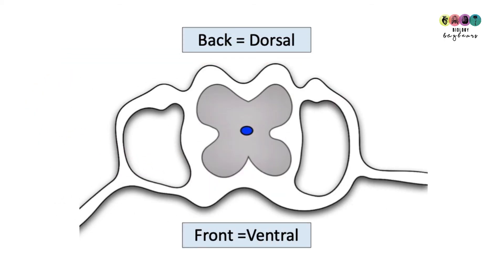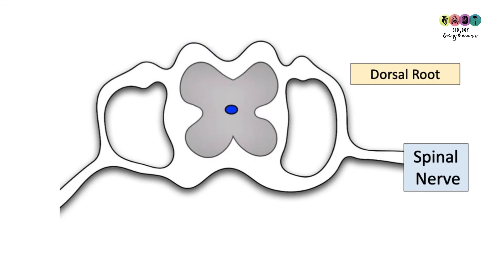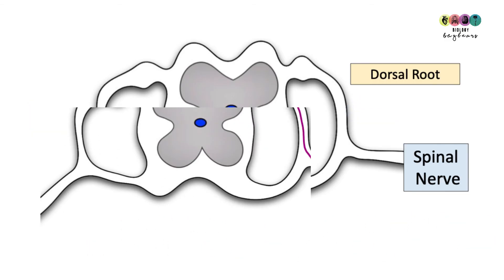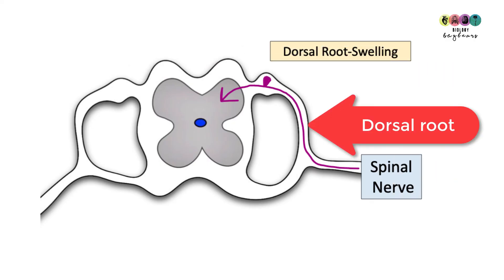It's also important that you recognize two terms. Dorsal means the back and ventral means the front. Leading into the spinal cord are the spinal nerves on either side and just as they enter the spinal cord they split. The back is known as the dorsal root and it's in through here that the sensory neurons will enter and carry impulses into the central nervous system, into the spinal cord. The sensory neuron enters the spinal cord through the dorsal root and we're always going to be able to recognize the dorsal root because it has a swelling called the dorsal root swelling.